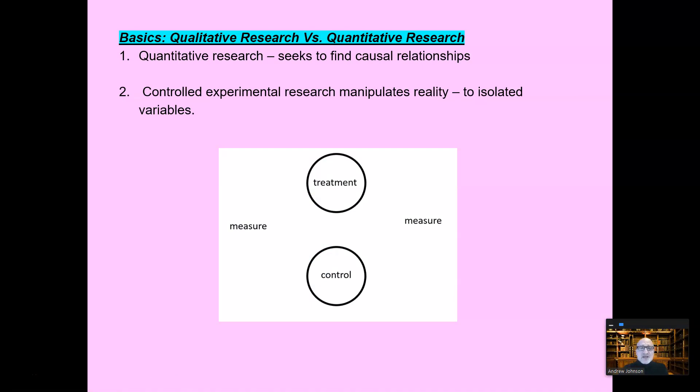Just a basic overview of qualitative versus quantitative research. Quantitative is what most people think about when you say the scientific method. It's to create and to look for causal relationships. One thing causes another thing to happen. In the typical study, you give a measure up front to show both groups are the same. You have a treatment group and a control group. Both groups are the same. You try to control all the variables except one, which is the treatment.